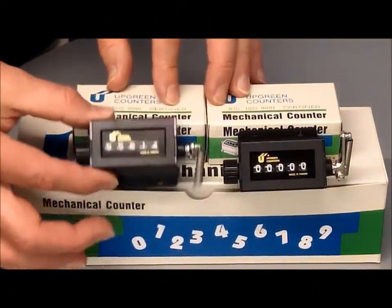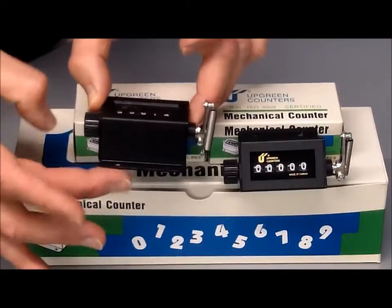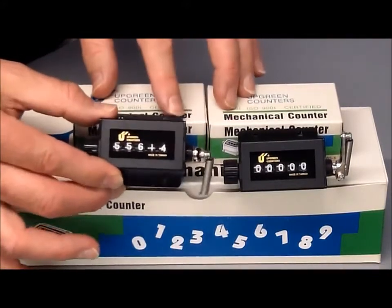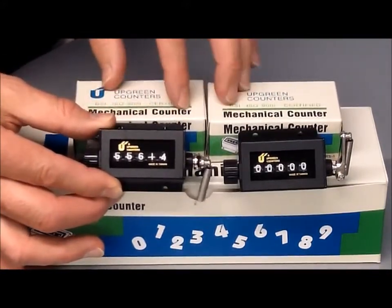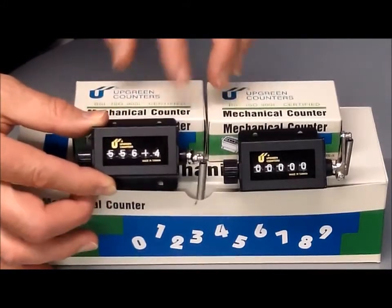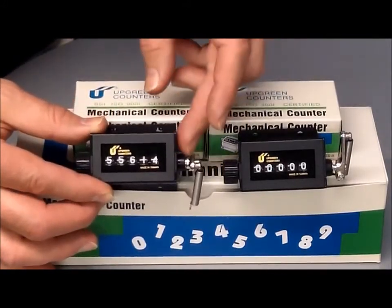The RS5 counter comes with a pre-drilled base so it's easy to mount on your machine. It's got five digits, white digits on a black background and the model that we stock is what's called top going.